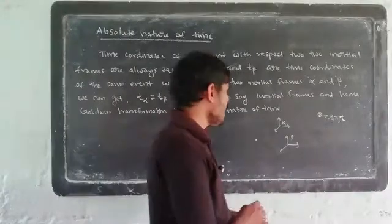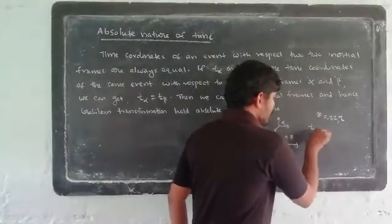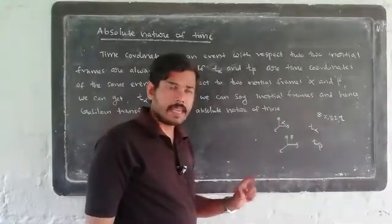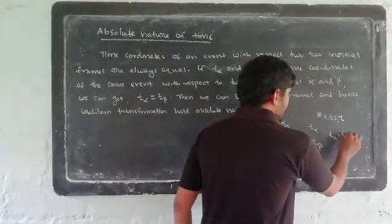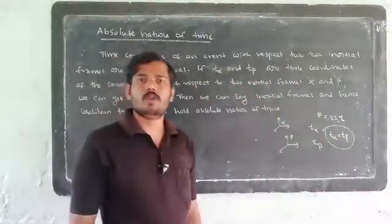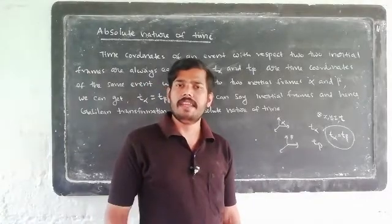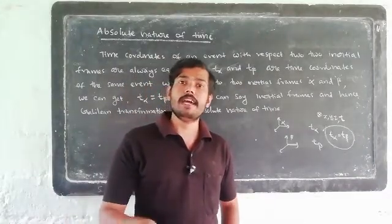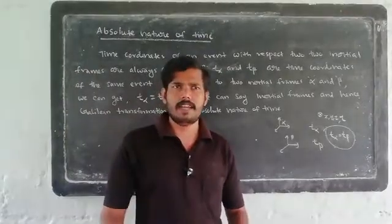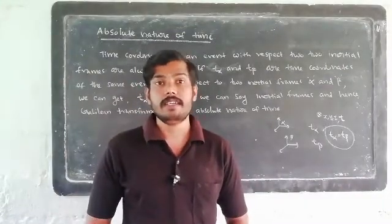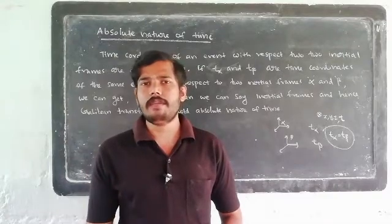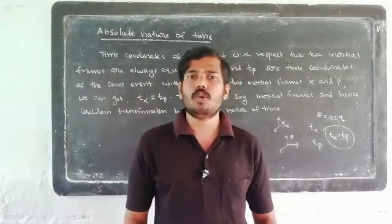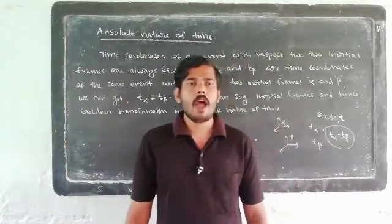Before we consider the time coordinates, t-alpha and t-beta represent the time coordinates of an event in the two frames. The time coordinates of the same event with respect to two inertial systems are always equal. In inertial frames, under Galilean transformation, the absolute nature of time holds, and the time coordinates of the same event in inertial frames are equal.